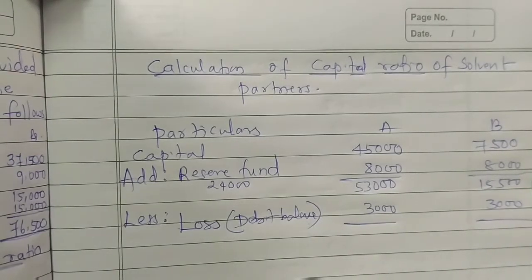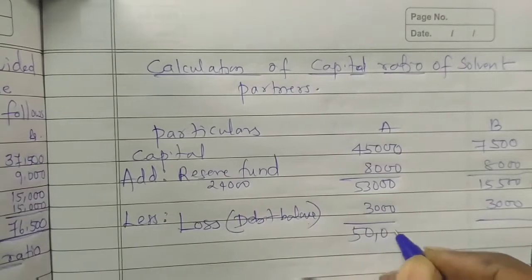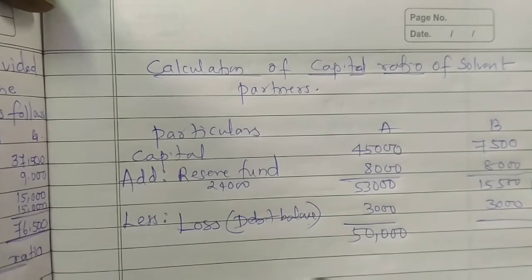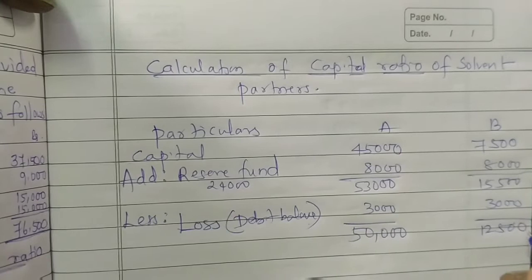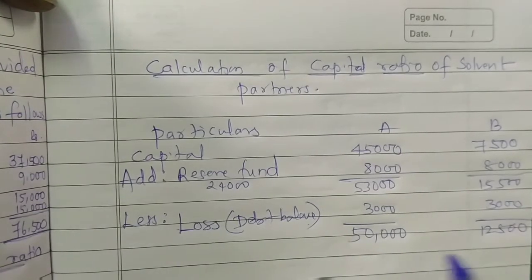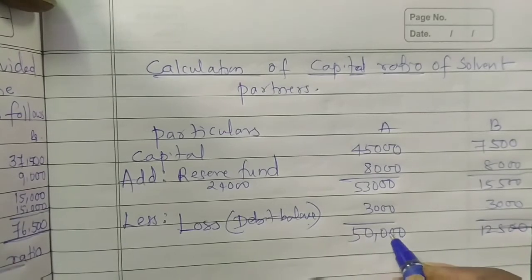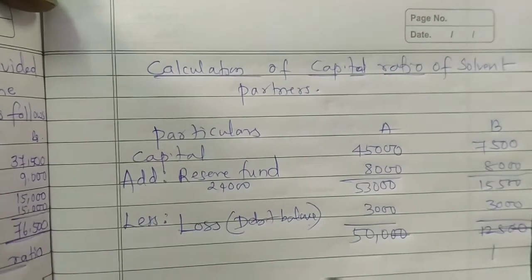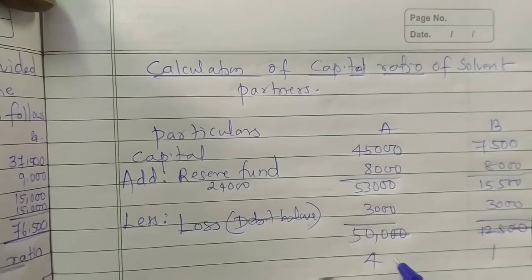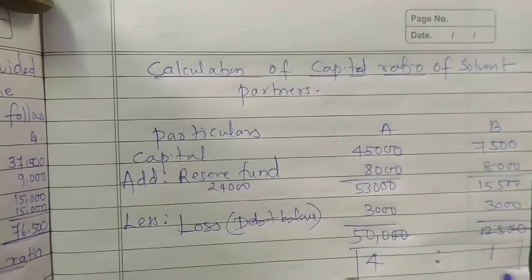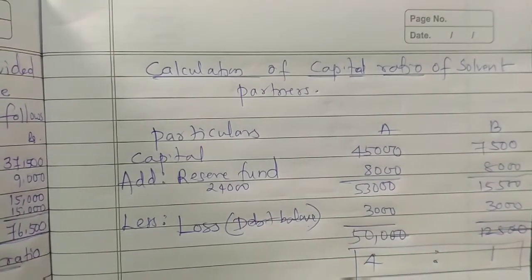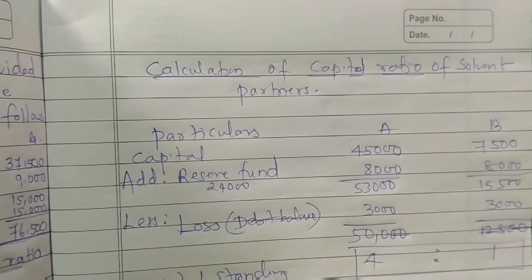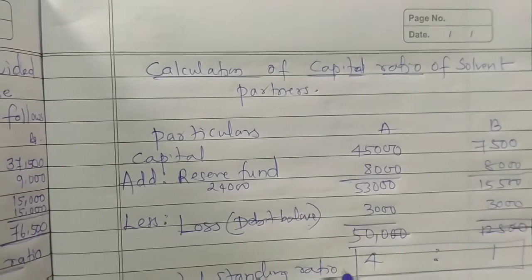So A = 53,000 minus 3,000 = 50,000, and B = 15,500 minus 3,000 = 12,500. Therefore the capital standing ratio of the solvent partners A and B is 50,000 : 12,500, which simplifies to 4 : 1.